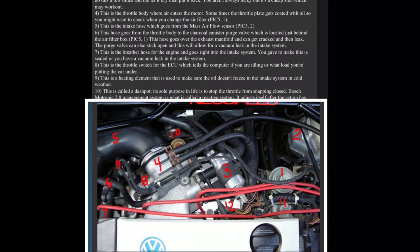Seven, this is the breather hose for the engine and goes right into the intake system. You have to make this a sealed or you have a vacuum leak in the intake system. Eight, this is the throttle switch for the ECU which tells the computer if you are idling or what load you're putting the car under. Nine, this is a heating element that is used to make sure the oil doesn't freeze in the intake system in cold weather.